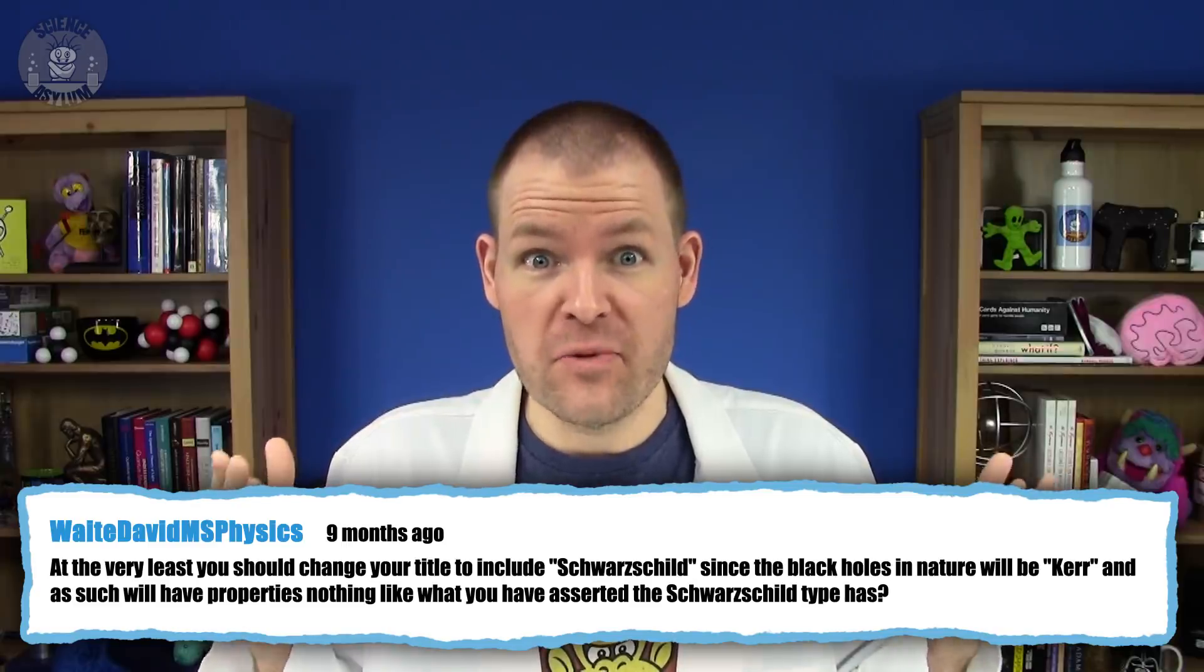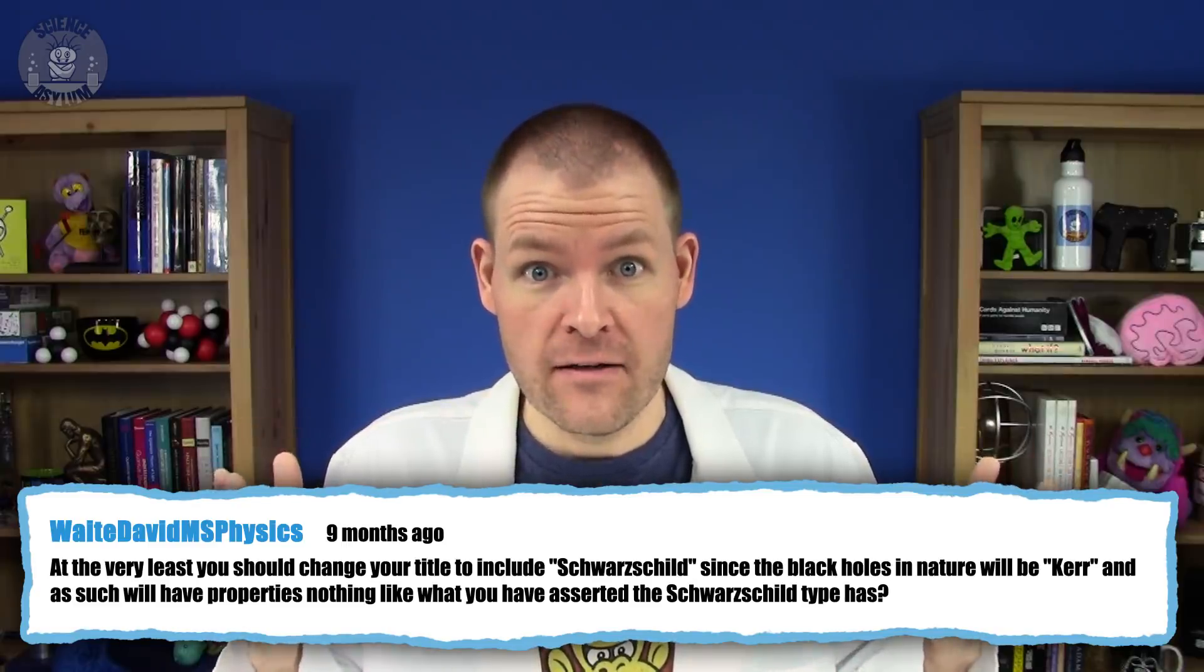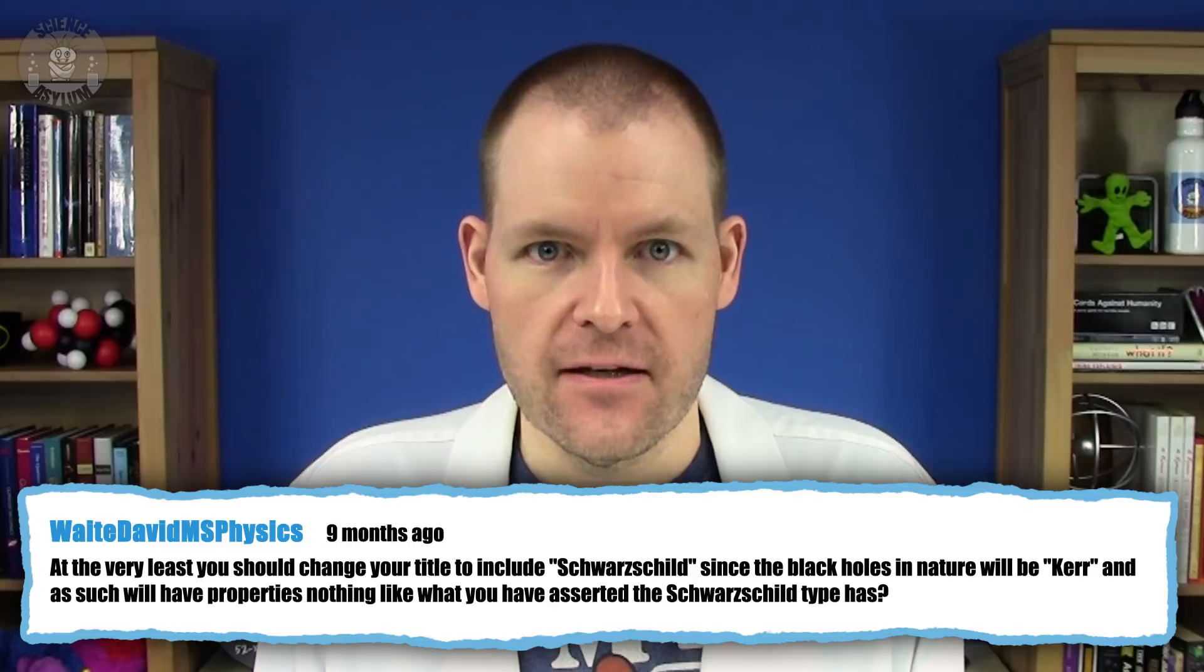Now, before we move forward, we're going to make a big assumption. For simplicity, we're going to assume this black hole is not rotating. Yes, I know that's not very realistic, but rotating black holes really deserve their own video. Making that assumption, the first thing you're going to notice is a sphere of orbiting light, which we naturally call a photon sphere.